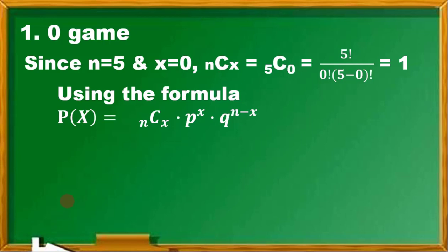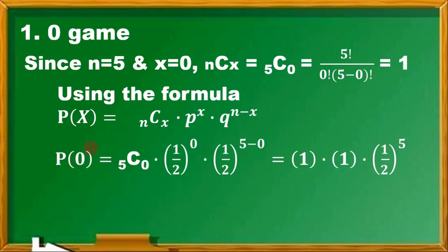P(0), using the same formula: 5C0—verifying in your calculator, it's going to be 1. You have the process how to get it without the calculator; if you want to feel more confident, use the calculator. So we have 1, then 1/2 raised to 0 is 1, then 1/2 raised to 5 minus 0 is 1/2 raised to 5. Simplifying, we have 1 out of 32. This is the final answer.